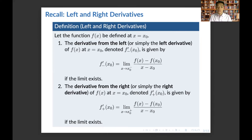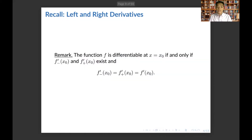The right derivative is similar to the left derivative, but we approach x0 from the right. We have this remark: the function f is differentiable at x equals x0 if and only if the left and right derivatives both exist and are equal to one another. The value of f prime of x0 is then given by that common value.